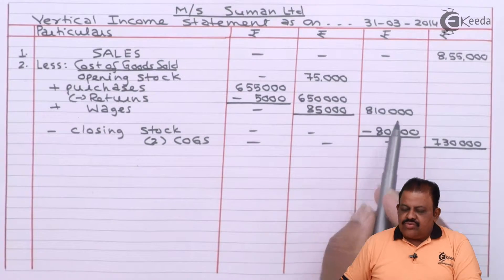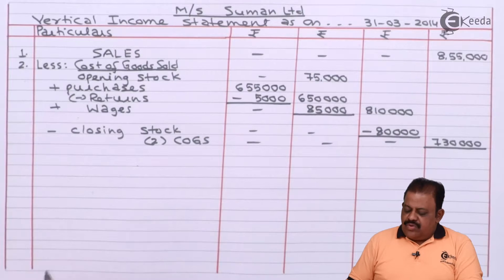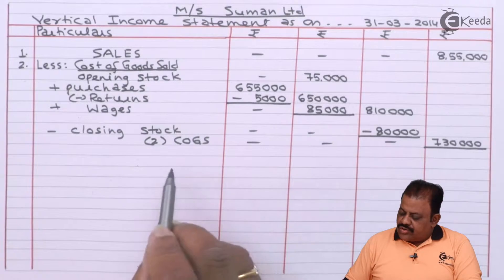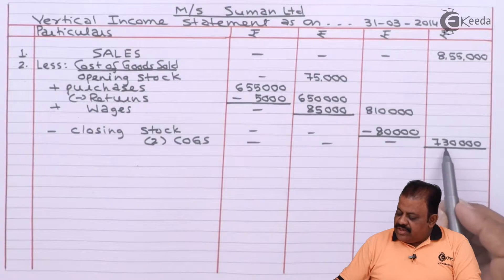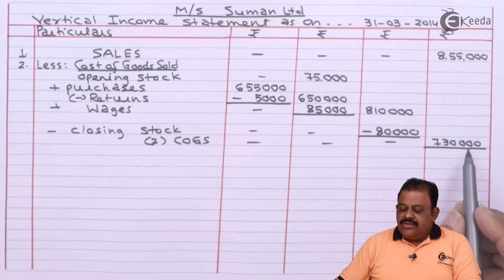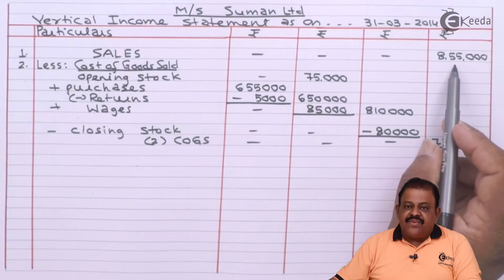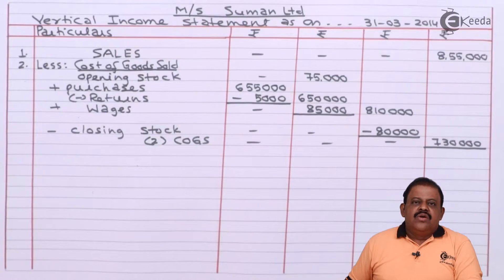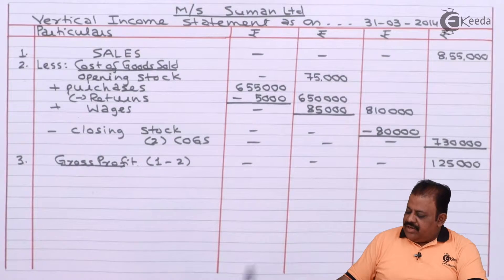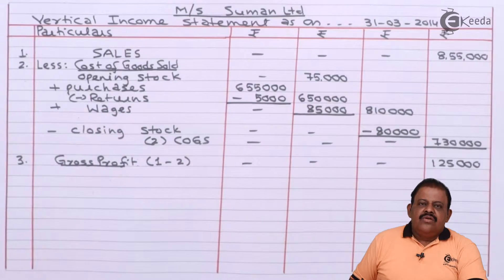Wages are part of cost of goods sold. Opening stock 75,000 plus net purchases (purchases less returns) 6,50,000, plus wages 85,000 gives a total of 8,10,000. From this we deduct closing stock 80,000, so cost of goods sold is 7,30,000. This is deducted from sales 8,55,000 to arrive at gross profit of 1,25,000.